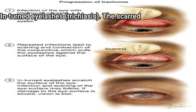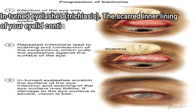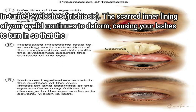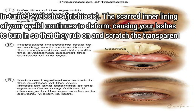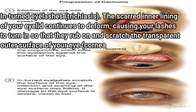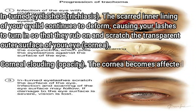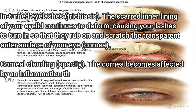Stage 3 — Eyelid scarring: repeated infections lead to scarring of the inner eyelid. The scars often appear as white lines when examined with magnification. The eyelid may become distorted and may turn in — a condition called entropion. Stage 4 — Trichiasis: the scarred inner lining of the eyelid continues to deform, causing lashes to turn in so that they rub on and scratch the transparent outer surface of the eye — the cornea.